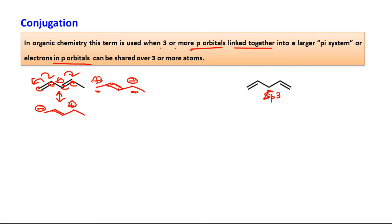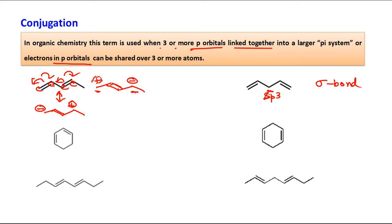You cannot extend conjugation when an sp3 carbon is present between two p orbitals. If you tried to force it, you would have to break a sigma bond. Pi bonds are higher in energy and weaker compared to sigma bonds, so breaking them is easier — but breaking sigma bonds is harder. That is why in the second case, conjugation is not possible.